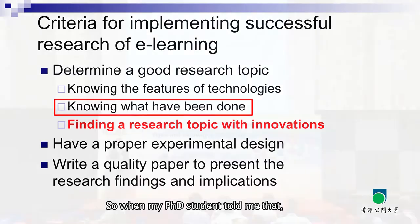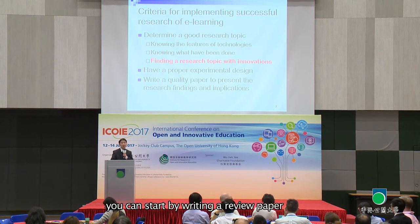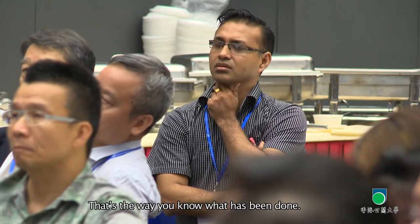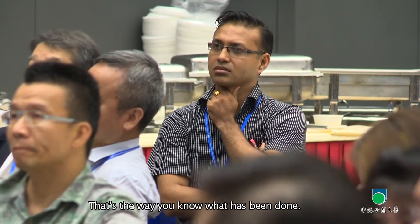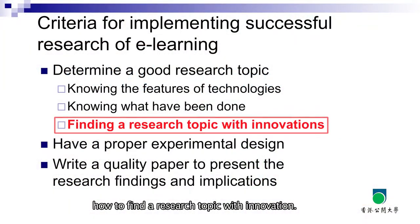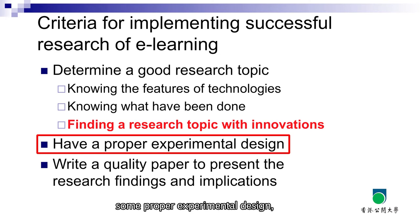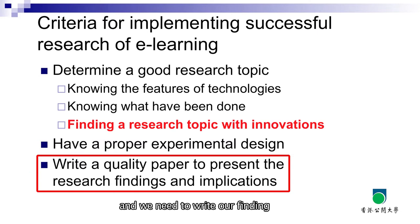When my PhD student tells me they want to do something about digital canvas learning, I tell them to start by writing a review paper so we know what has been done. Of course, the most important thing is knowing how to find research topics with innovation. After that, we need proper experimental design and to write our findings in a logical way.